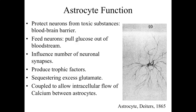More recently it's been found that astrocytes have a whole variety of other functions. They can be involved with feeding neurons — actively pulling glucose out of the bloodstream and transporting it into the nervous system environment where it can diffuse to nerve cells and serve as their primary energy source. Under some circumstances, astrocytes can also influence the number of neuronal synapses, establishing the environment in which nerve cells interact with their targets for sending and receiving signals.